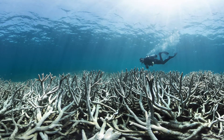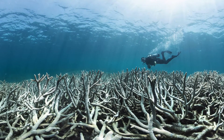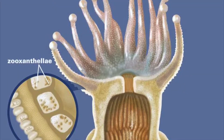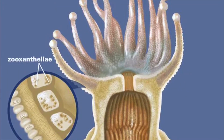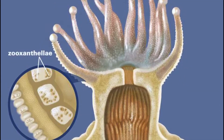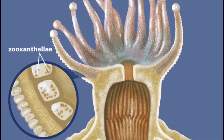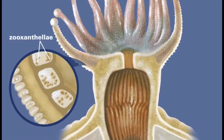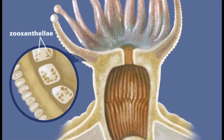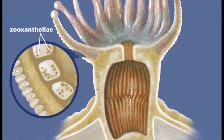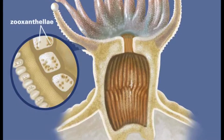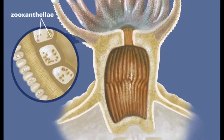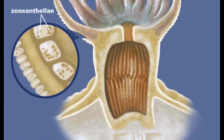First, let's talk about how corals grow. Corals have a symbiotic relationship with plankton, in which the plankton gets a place to live in the coral and the coral gets some of the energy that the plankton makes while it photosynthesizes. The coral uses this energy to grow and repopulate.